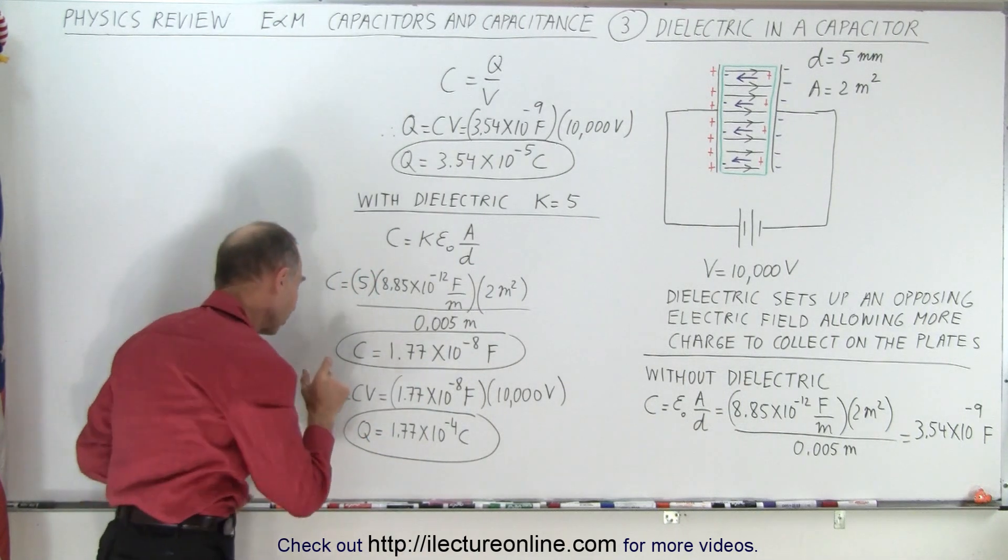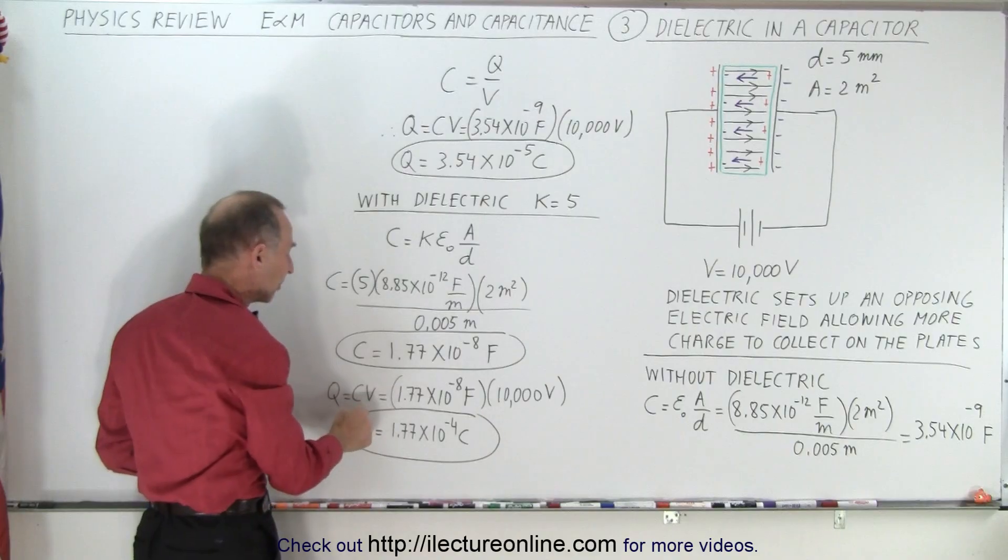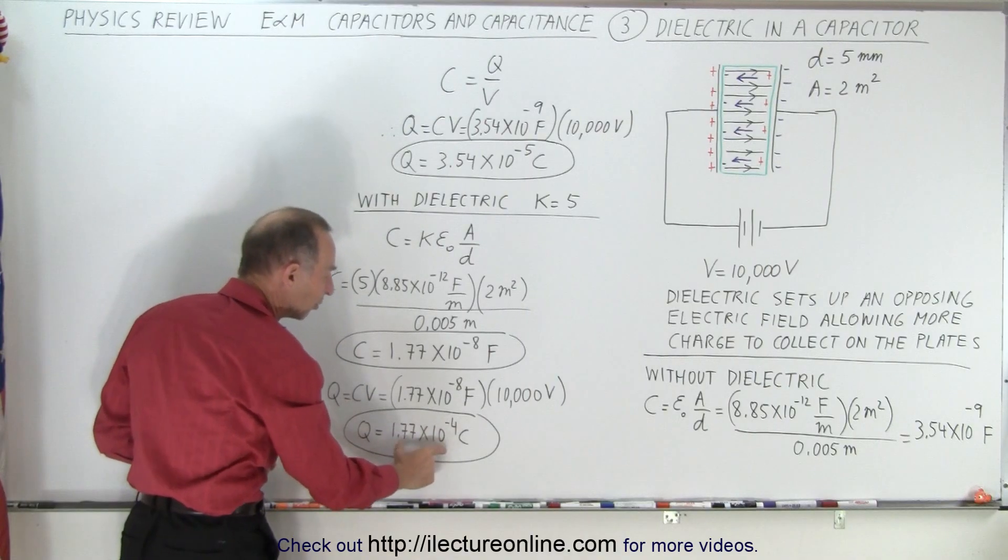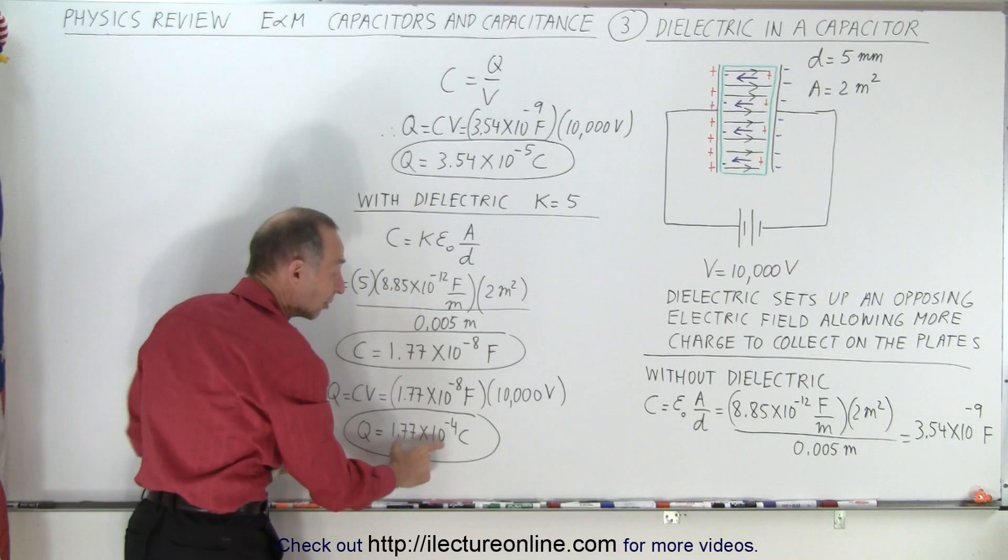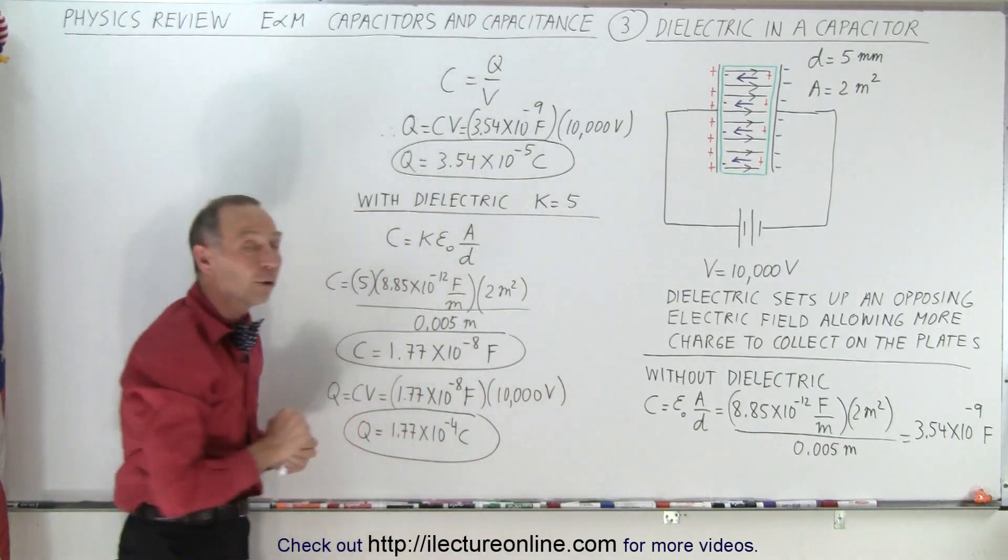And therefore, the amount of charge you can place on the capacitor with the same voltage supply is now 5 times as much because you have 5 times the capacitance. And so you can hold this much charge with that capacitor, now that it has a dielectric in there, with the same voltage supply.